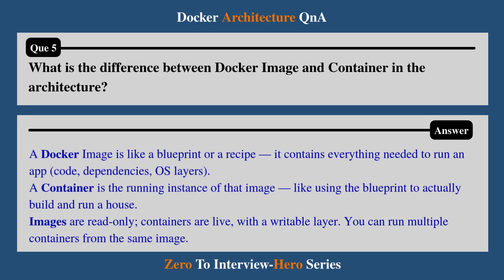Question 5: What is the difference between a Docker image and a container in the architecture? A Docker image is like a blueprint or a recipe — it contains everything you need to run an app, like code, dependencies, and OS layers. A container is the running instance of that image, like using the blueprint to actually build and run a house. Images are read-only; containers are live with a writable layer. You can run multiple containers from the same image.